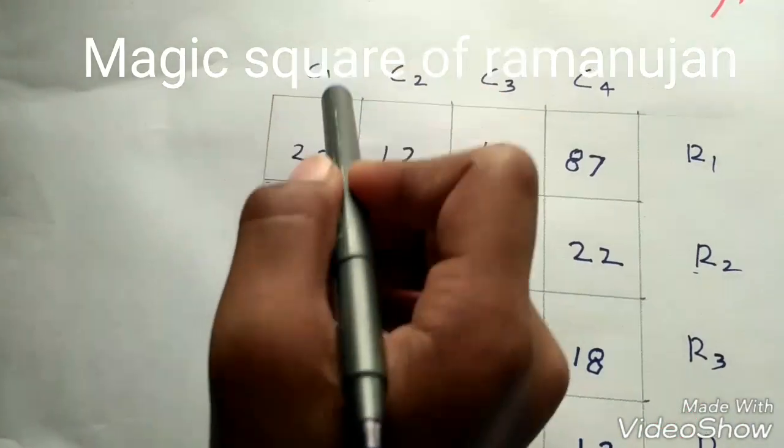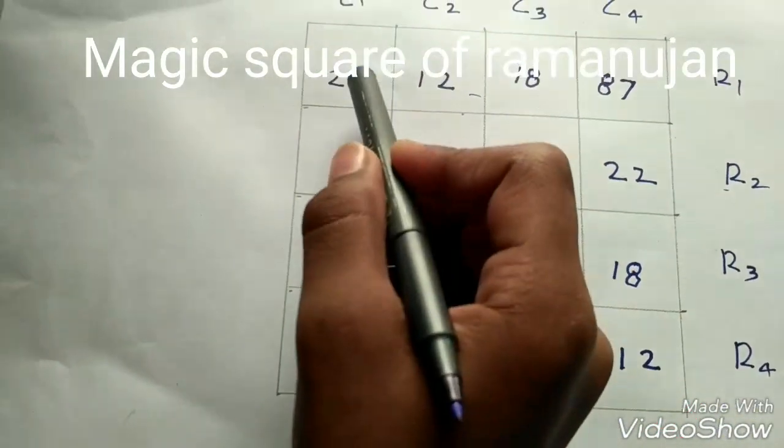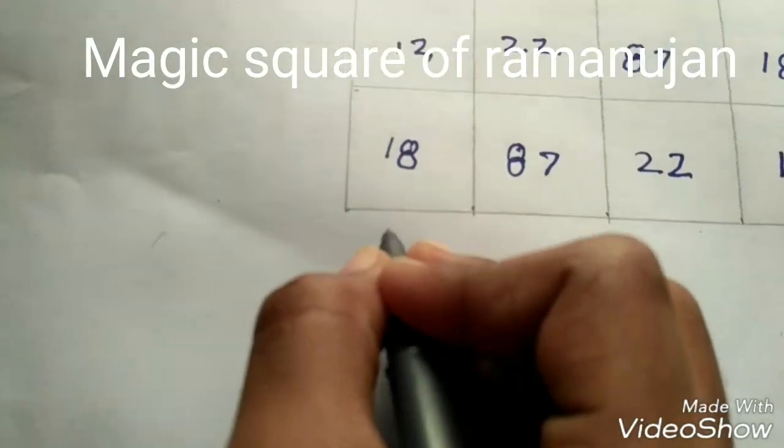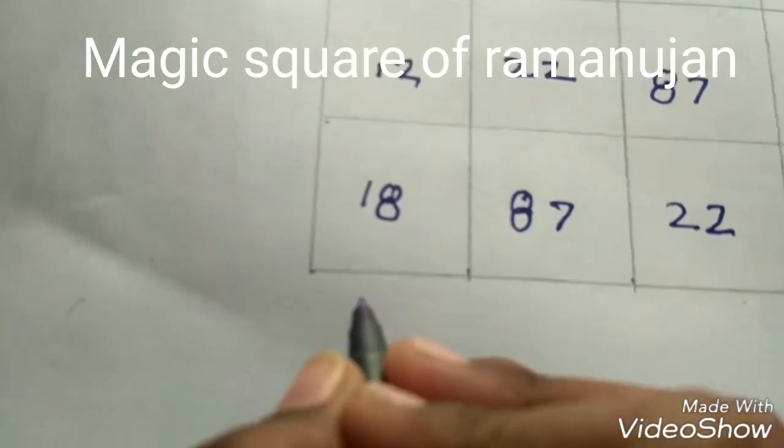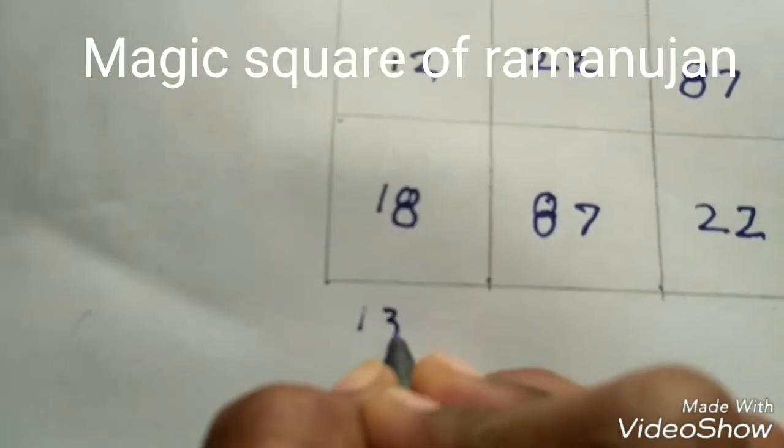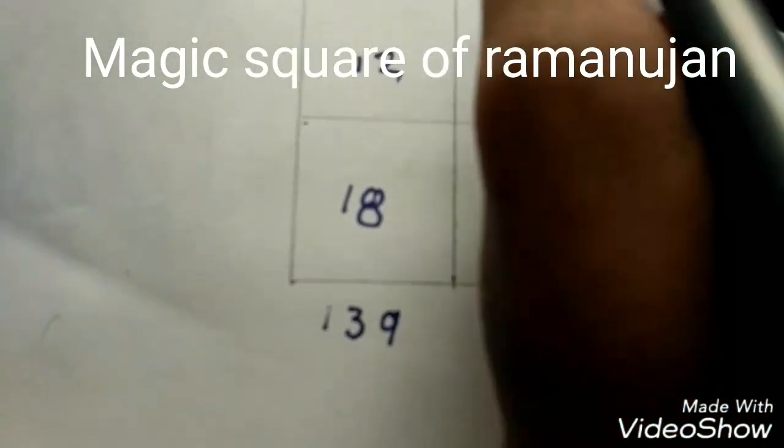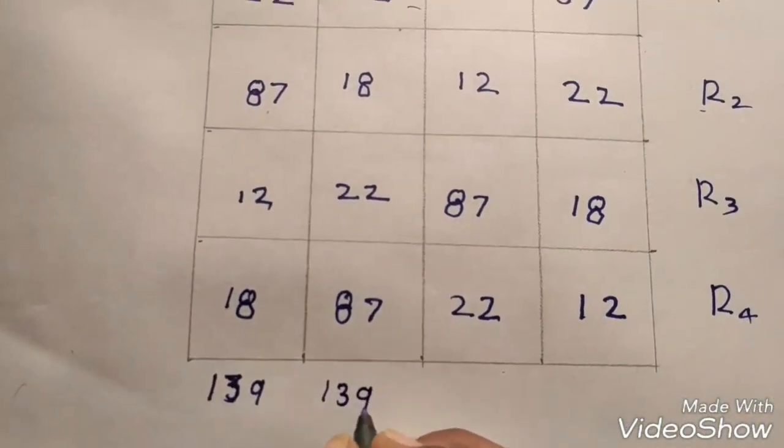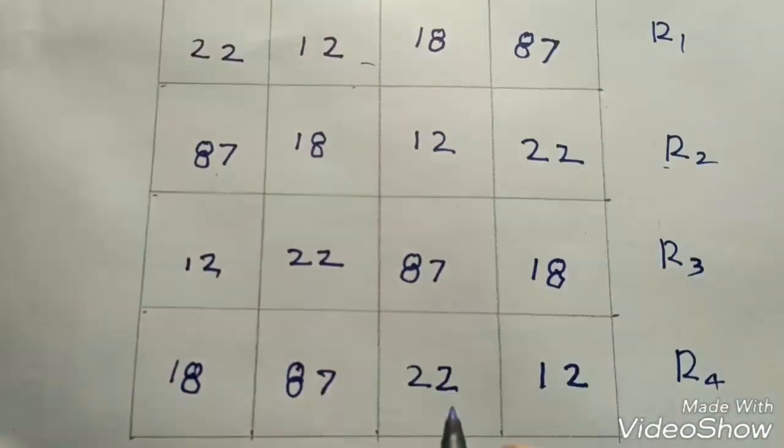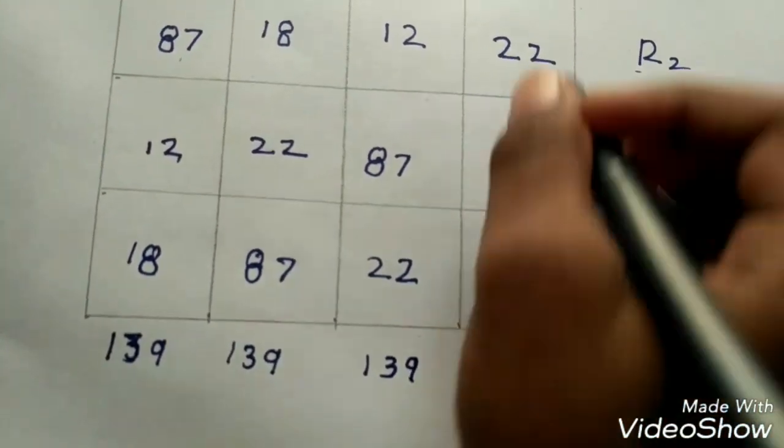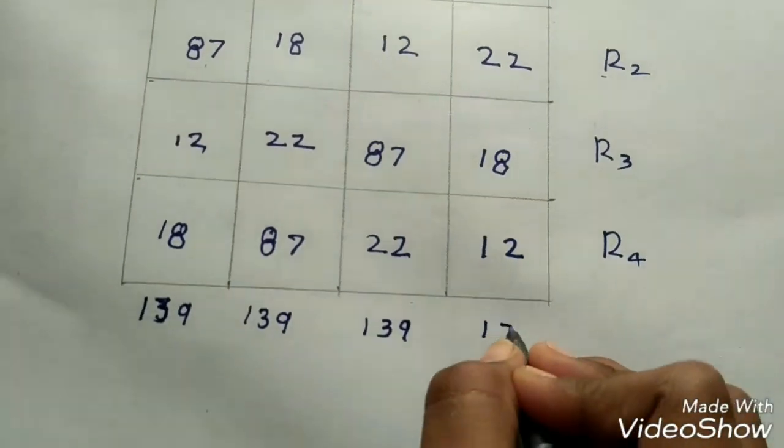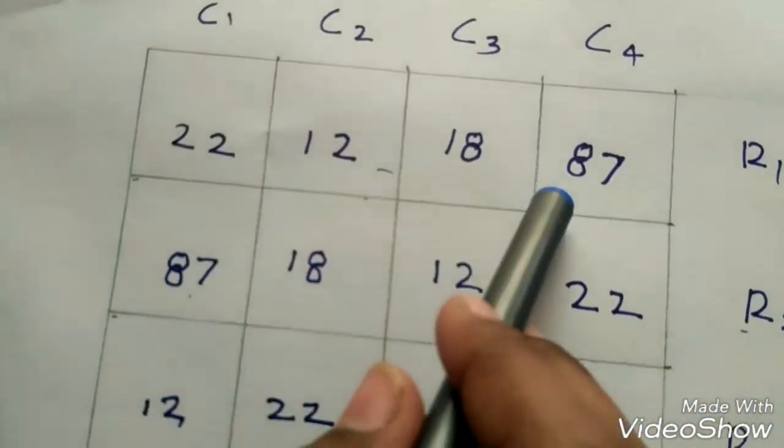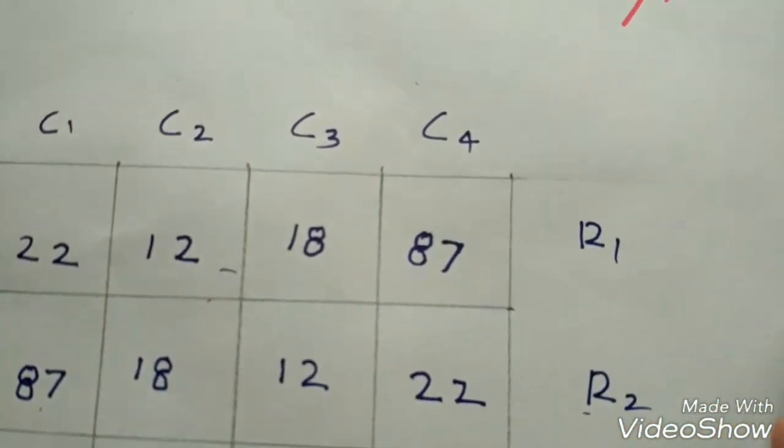This 1st column: 22 plus 87 plus 12 plus 18 is equal to 139. 2nd column: 22 plus 18 is equal to 139. 3rd column is equal to 139. 4th column is equal to 139. Add all 4 numbers in first row is equal to 139.